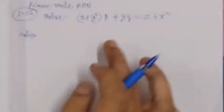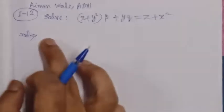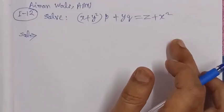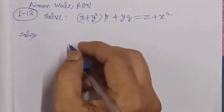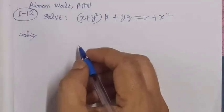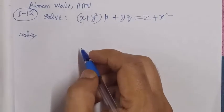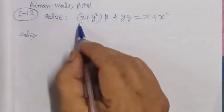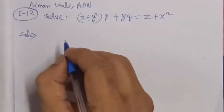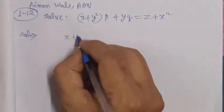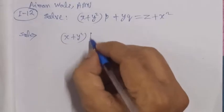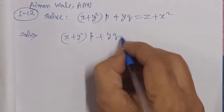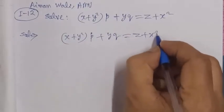First of all, we note the given differential equation: x plus y squared p plus y q is equal to z plus x squared. Then we will find the corresponding auxiliary equation to solve it.